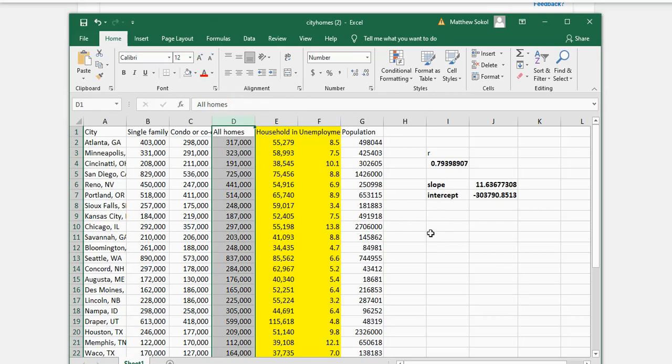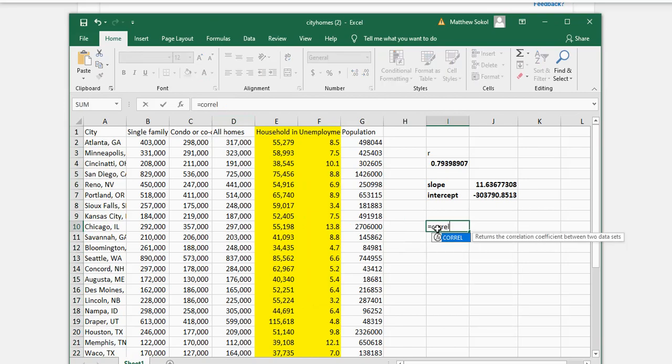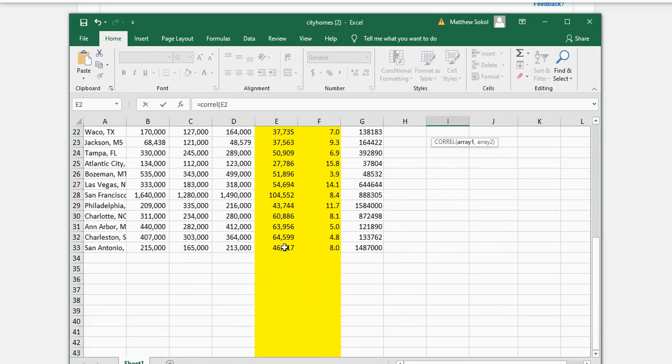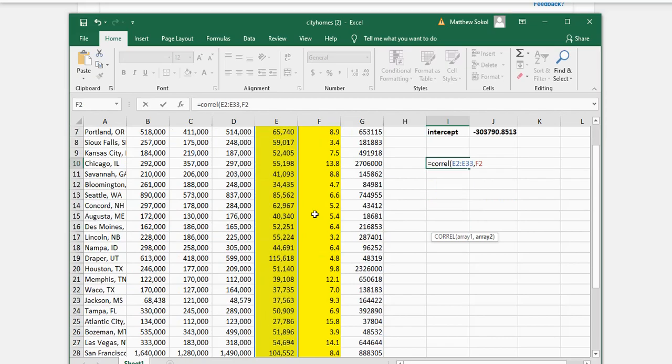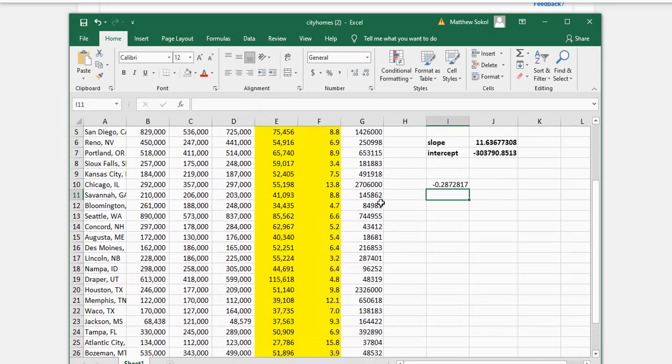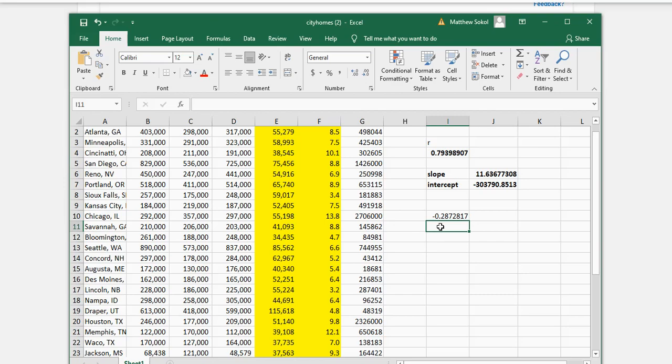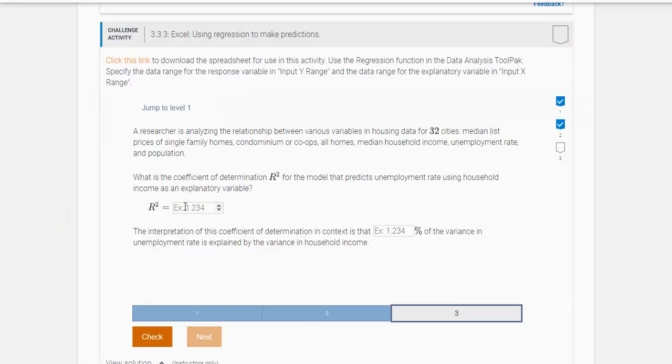This is R squared. You can find the correlation coefficient between the two. We're using household income as the x variable and the unemployment rate as the y variable. Then R squared is you're going to take this value and square it. You get 0.083 when I round to three decimal places.